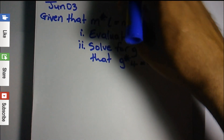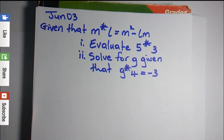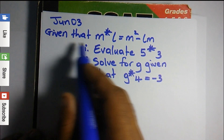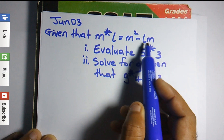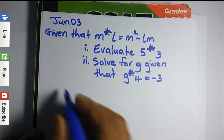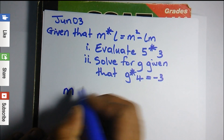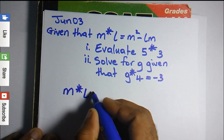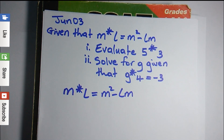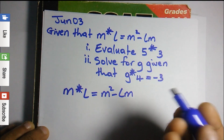This is a binary operation question from the June 2003 CXC math paper. The question states that m★l is equal to m squared minus lm. We are going to solve this question. Remember, the asterisk doesn't mean you're going to add, subtract, multiply, or divide — it's only representing the binary operation. You should always remember that.